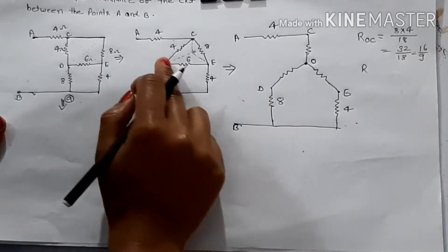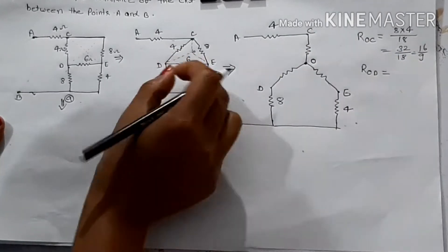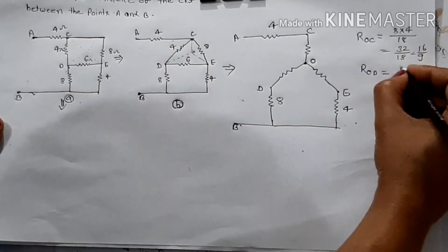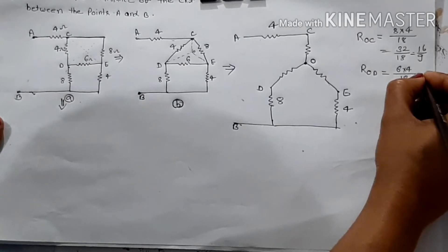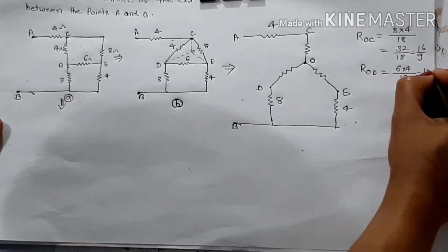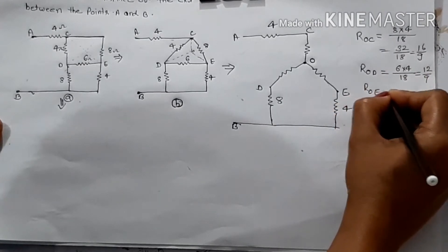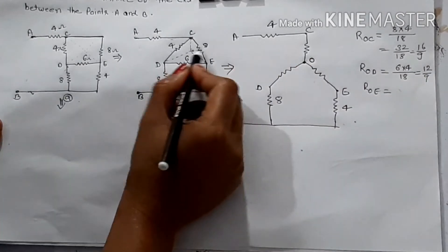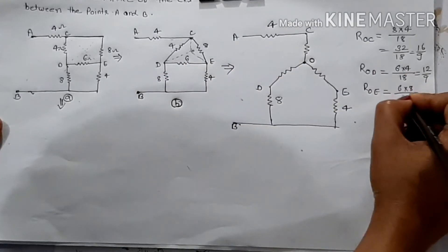Similarly ROD, ROD is 4 into 6, 6 into 4 upon 18. ROE is 6 into 8, 6 into 8 upon 18.